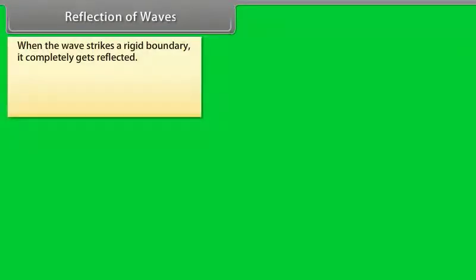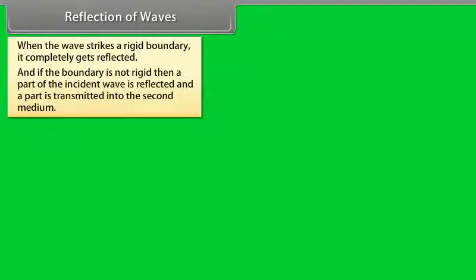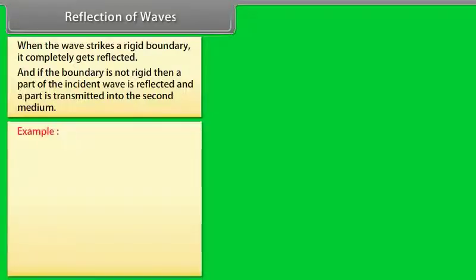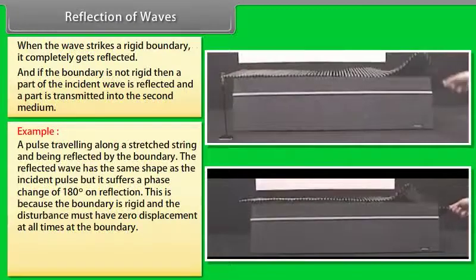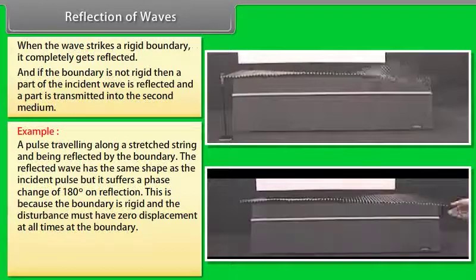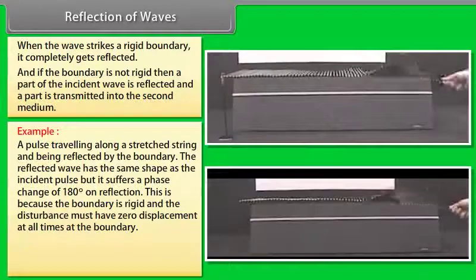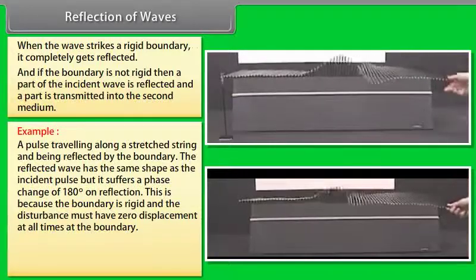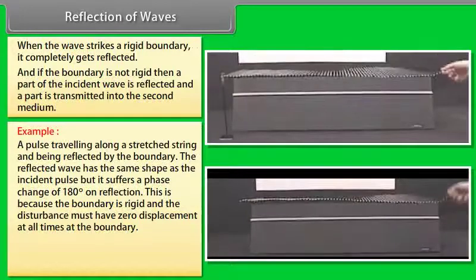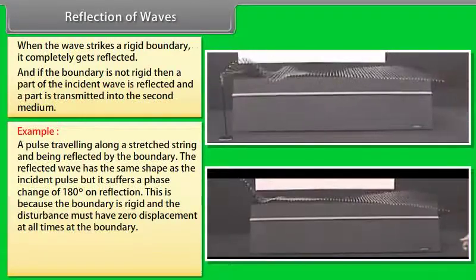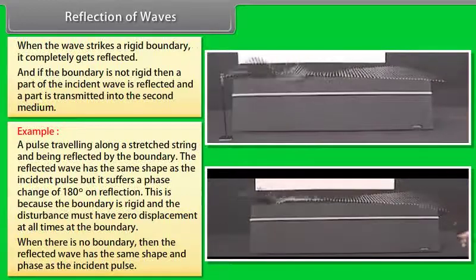Reflection of waves: When a wave strikes a rigid boundary, it completely gets reflected. If the boundary is not rigid, then a part of the incident wave is reflected and a part is transmitted into the second medium. A pulse traveling along a stretched string being reflected by a rigid boundary has the same shape as the incident pulse but suffers a phase change of 180 degrees on reflection, because the disturbance must have zero displacement at the boundary. When there is no rigid boundary, the reflected wave has the same shape and phase as the incident pulse.